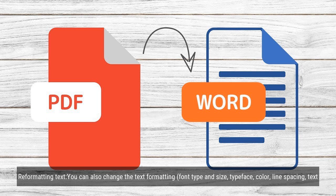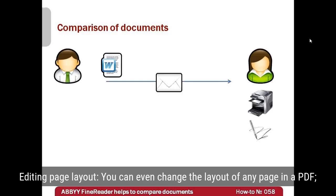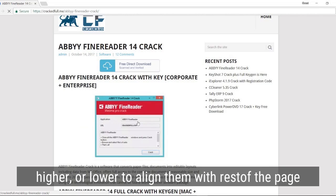Reformatting text: you can also change the text formatting — font type and size, typeface, color, line spacing, text alignment and direction — either for the whole paragraph or for only a selection of text. Editing page layout: you can even change the layout of any page in a PDF, add or delete paragraphs, change their positioning or order, and make them wider, narrower, higher, or lower to align them with the rest of the page. Throughout the process, the text will automatically flow into the layout to fit the changes you make.